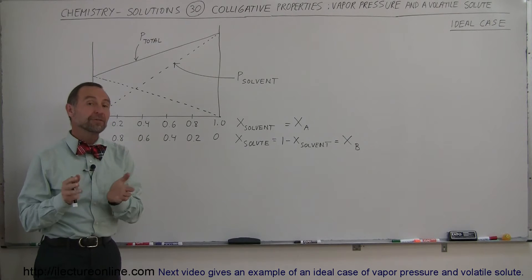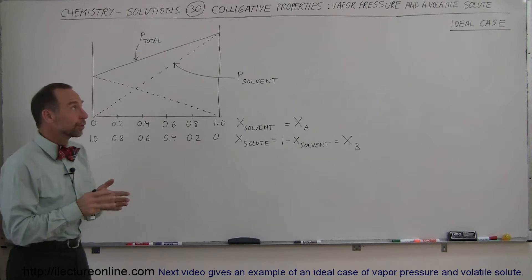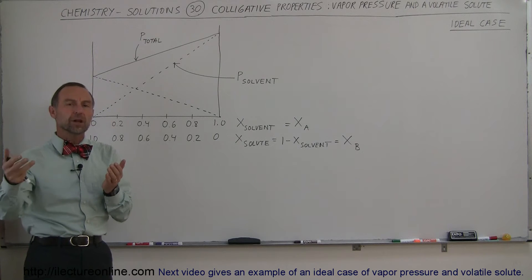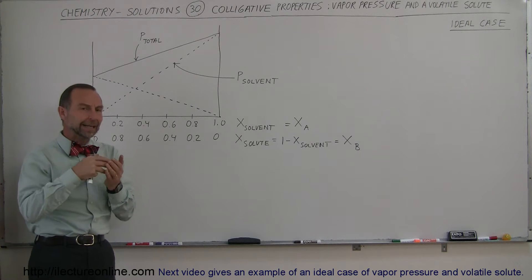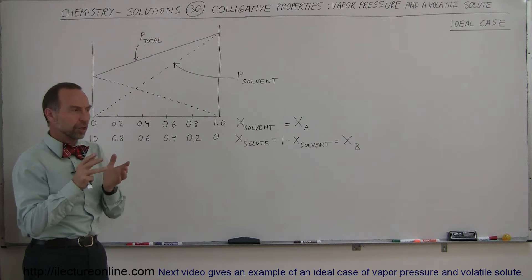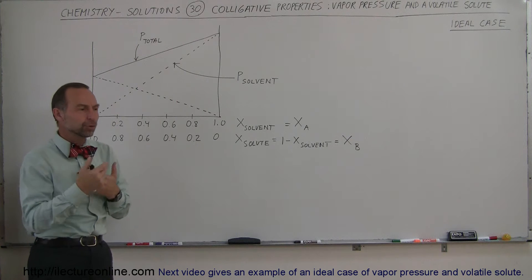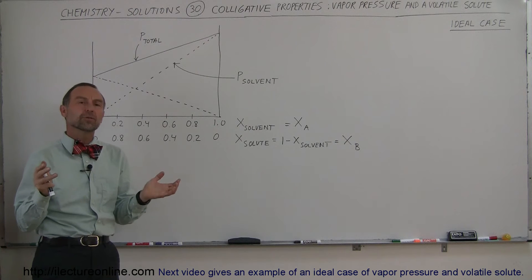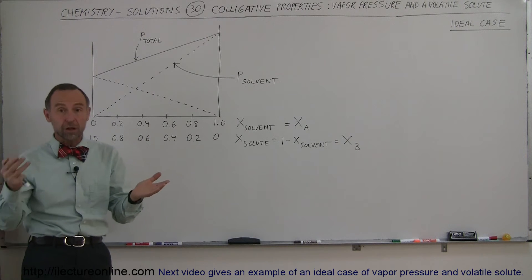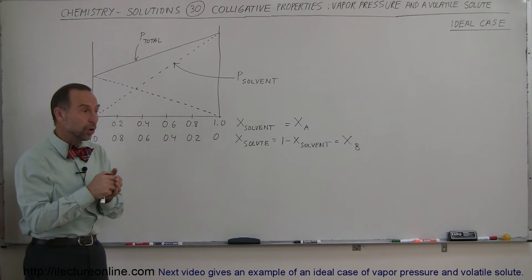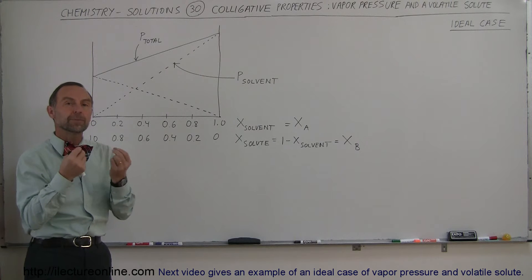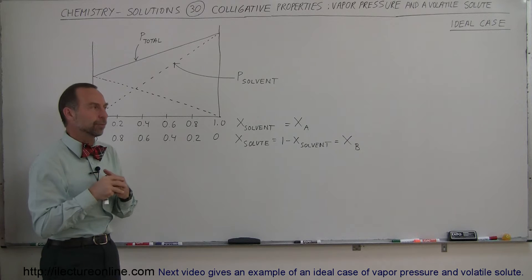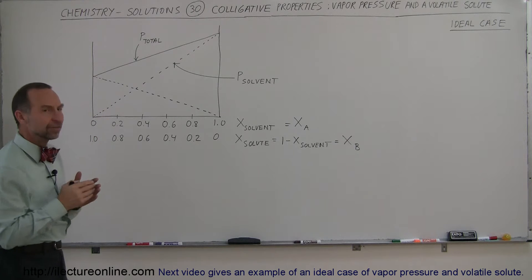Welcome to ElectronLine. In previous videos we looked at vapor pressure of solvents and solutions where the solute added to the solvent was not volatile — it did not produce any appreciable vapor pressure of its own. But there are situations where both the solvent and the solute, once dissolved, will each cause a vapor pressure to exist on their own, resulting in a combined vapor pressure. So we have to look at things a little differently.